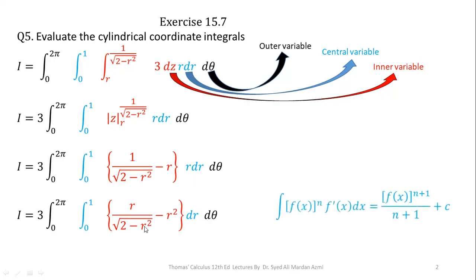And then, in order to integrate first term, we will use this formula. If in the process of integration, we have a function with some power, and the derivative of function is available as a multiplier in the integrand, then the integration of function is f of x to power n plus 1 over n plus 1. What it means, we will add 1 in the power of given function, and then divide with the same number.